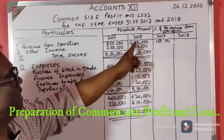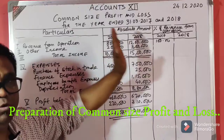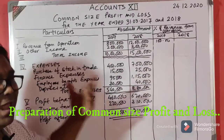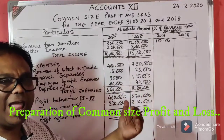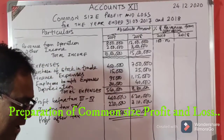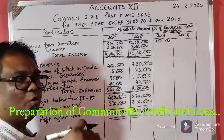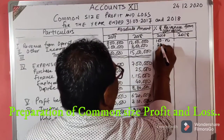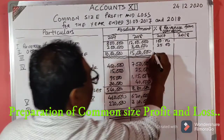Other income in 2017 is 2 lakhs. So 2 lakhs divided by revenue from operations of 8 lakhs into 100 — 2 by 8 is one-fourth — gives 25 percent. So here this will become 100 and 25.